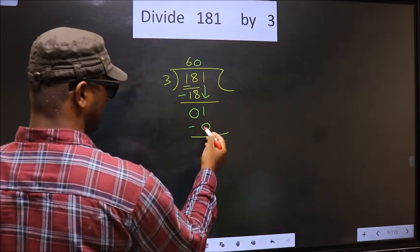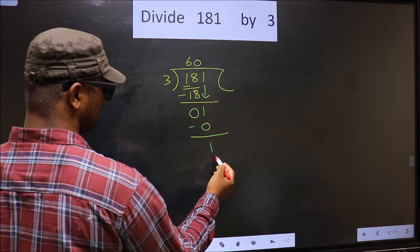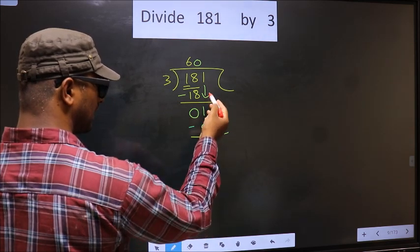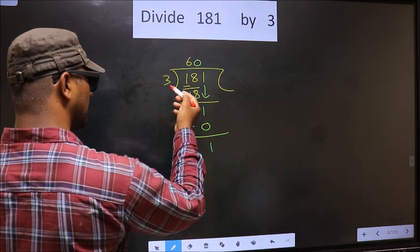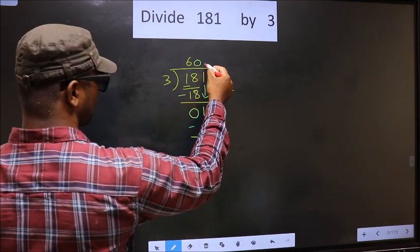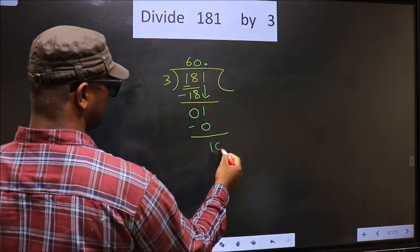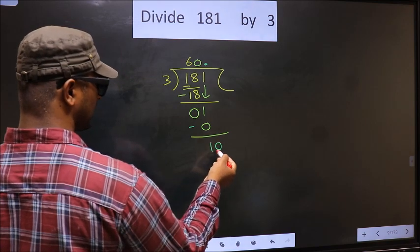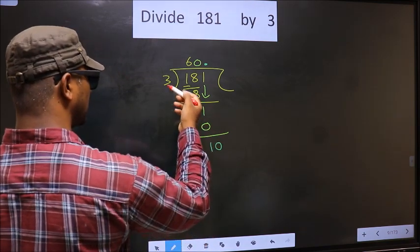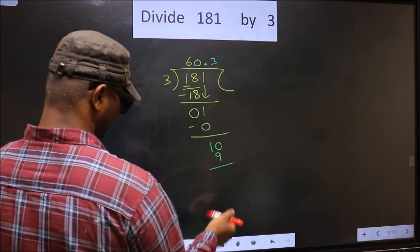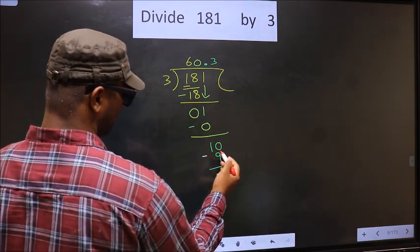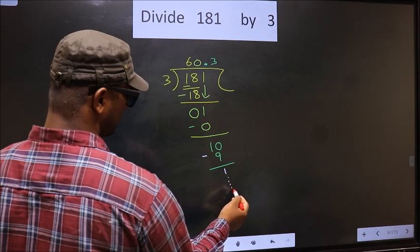Now you subtract. 1 minus 0, 1. Now over here we did not bring any number down, and 1 is smaller than 3. So now you can put a dot and take 0 here. So here we have 10. A number close to 10 in 3 table is 3, 3 is 9. Now you subtract. You get 1 and the division continues.